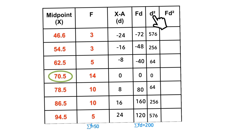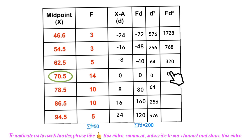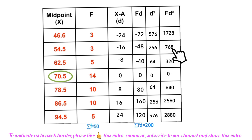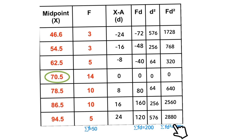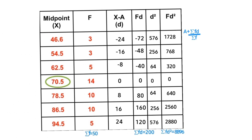For fd²: first row 3 × 576 = 1728; 3 × 256 = 768; 5 × 64 = 320; 14 × 0 = 0. We apply the same rule to fill the rest. Adding up all fd² values: 1728 + 768 + 320 + 0 + 640 + 2560 + 2880 = 8896.